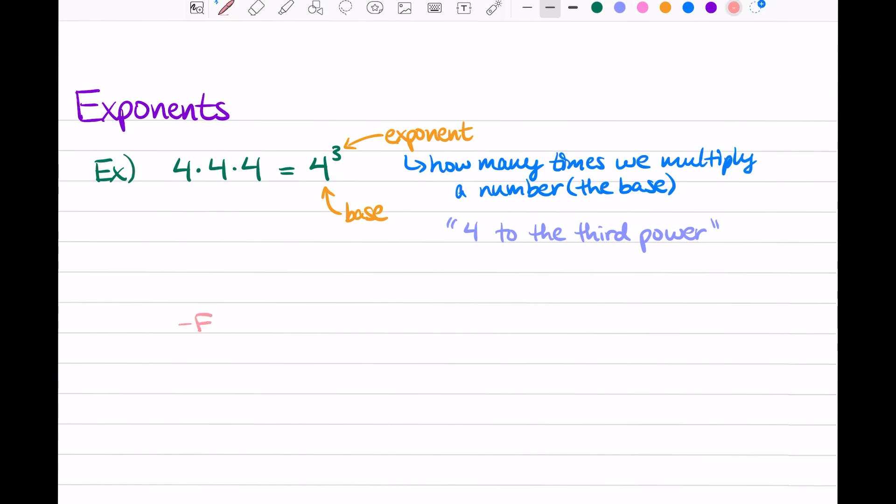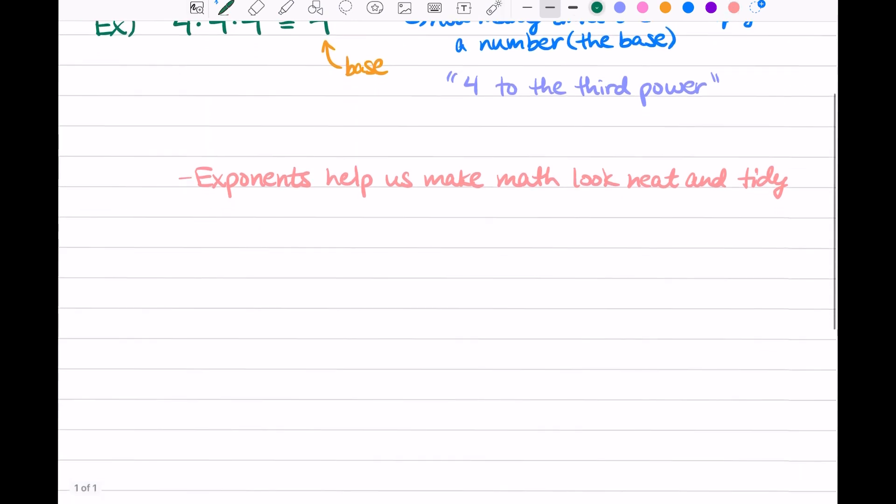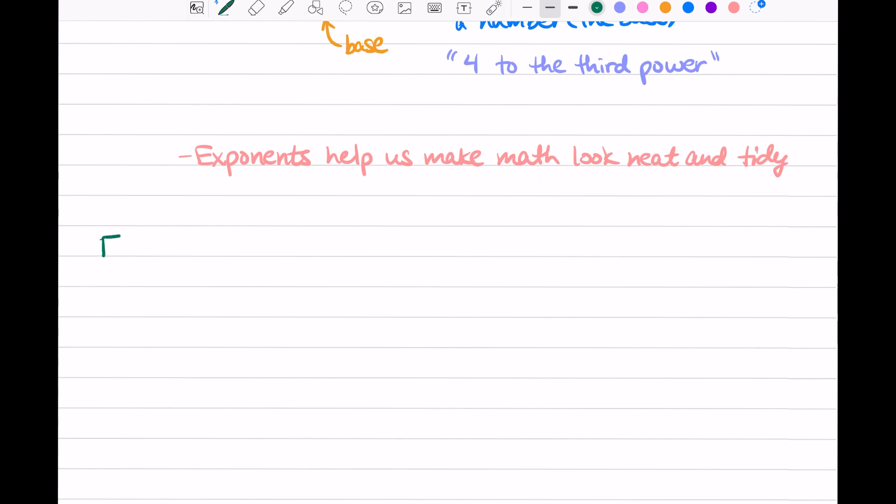So again, exponents is a shorthand, a symbol, and they help us make math look neat and tidy. Let's do another example. Let's say we multiply 7 five times. So how could we write that using exponents?